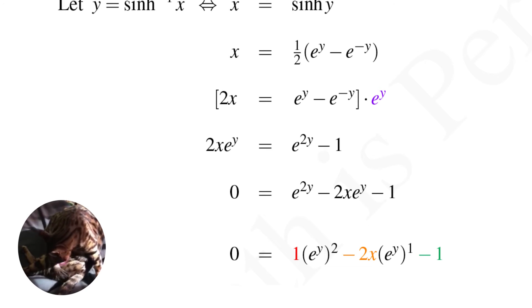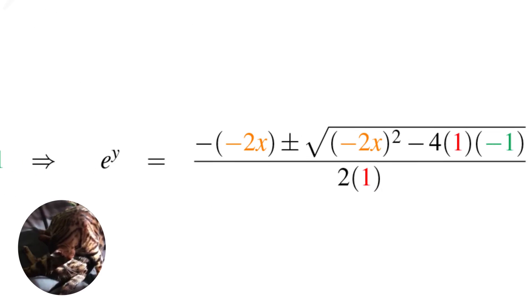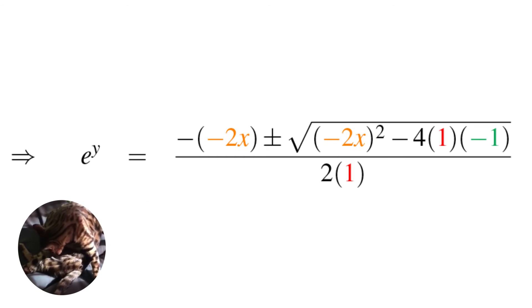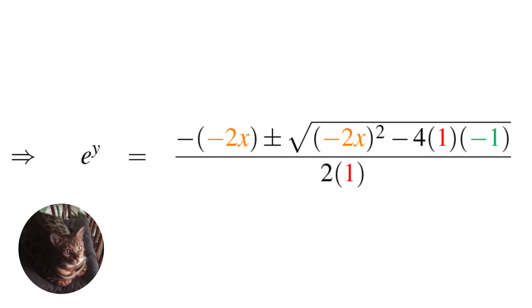Using my quadratic formula, I have that e to the y equals minus negative 2x plus or minus the square root of quantity negative 2x squared minus 4 times 1 times the quantity negative 1 all over 2 times 1.